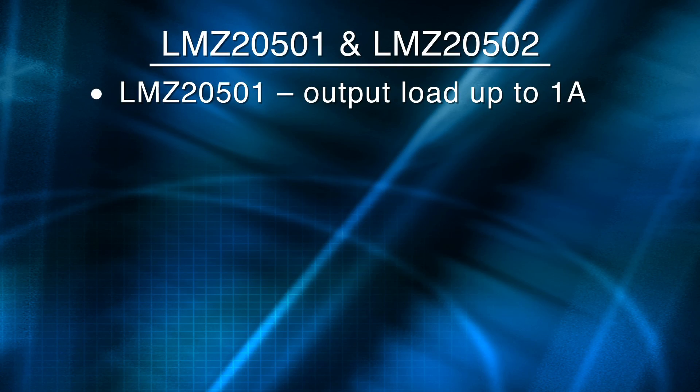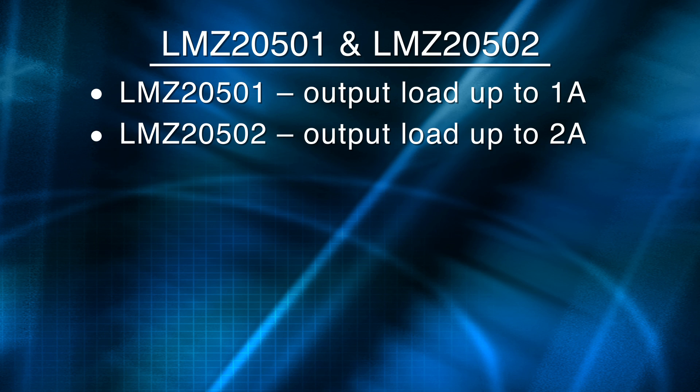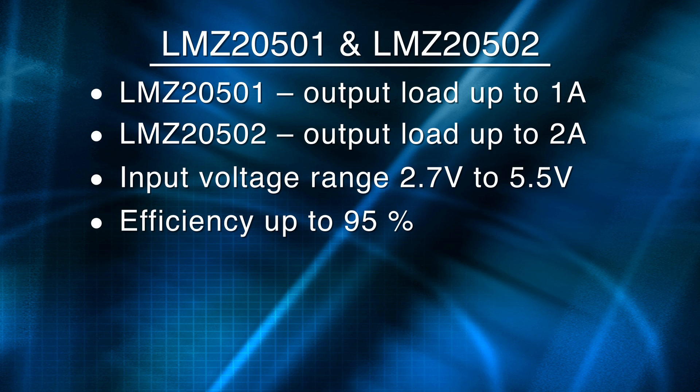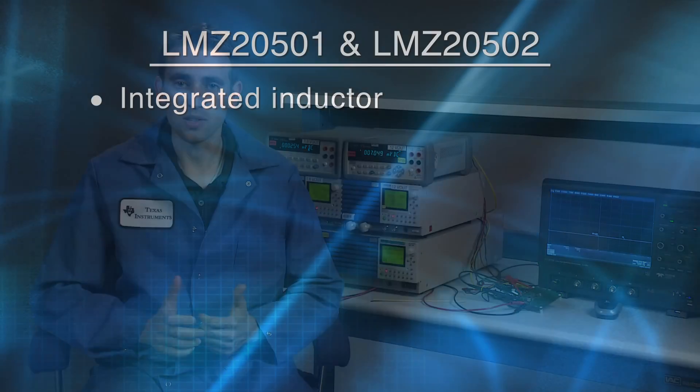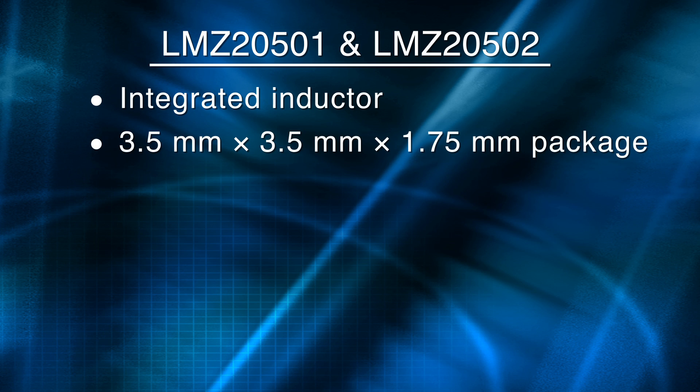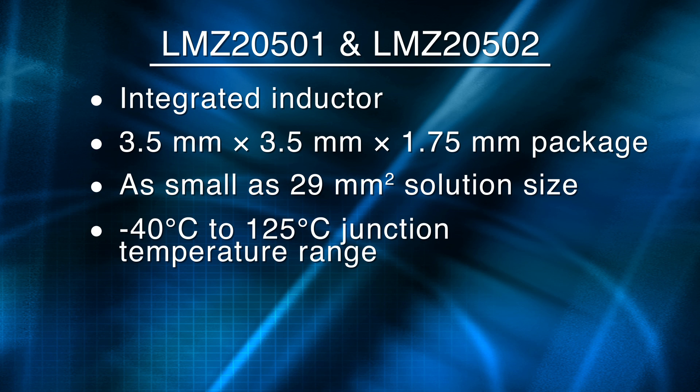The LMZ20501 and 502 nano modules are easy to use synchronous step down DC-DC converters capable of driving an output current up to 1 amp with the 20501 and 2 amps with the 20502, both from an input of up to 5.5 volts. Both offer exceptional efficiency and output accuracy in a very small solution size with innovative packaging that contains the regulator and inductor in a small 3.5 by 3.5 by 1.75 millimeter package, saving board space and eliminating the time and expense of inductor selection.